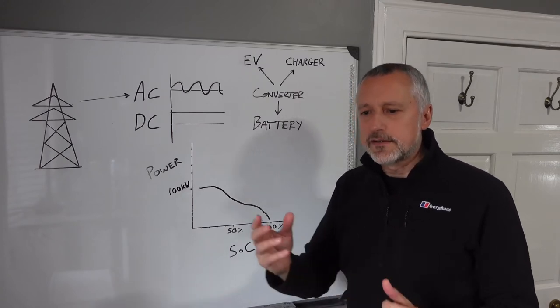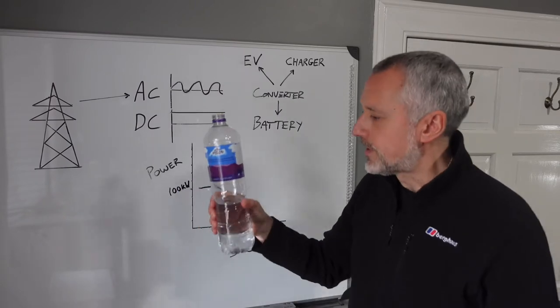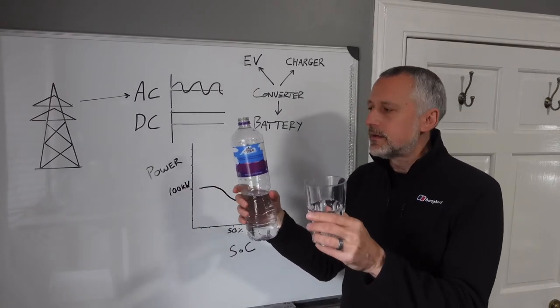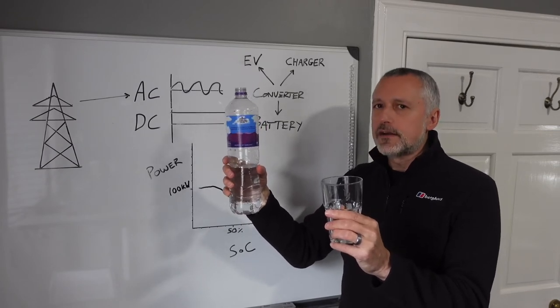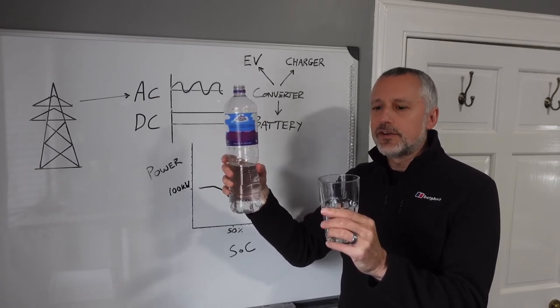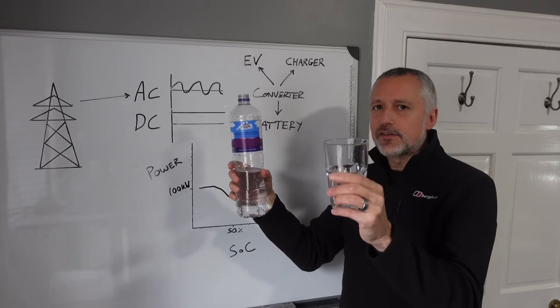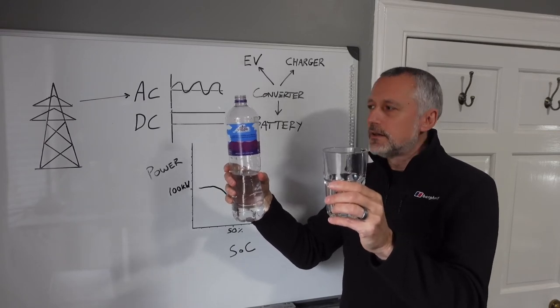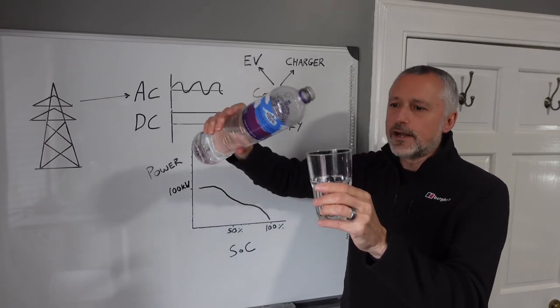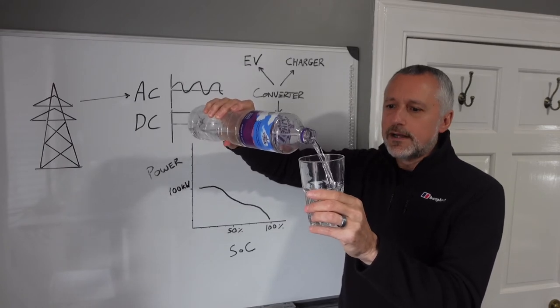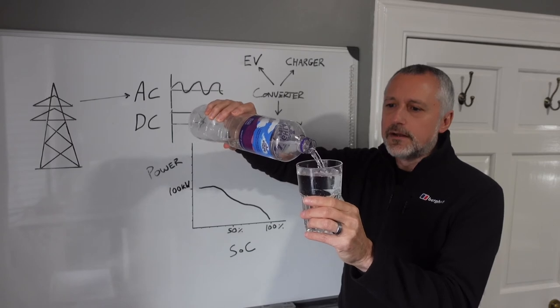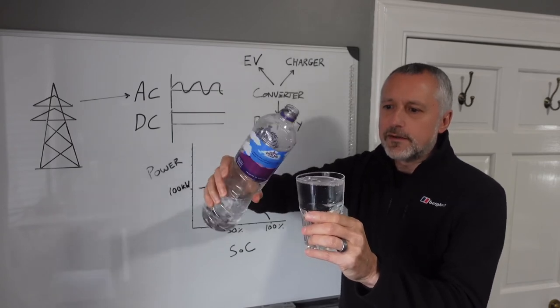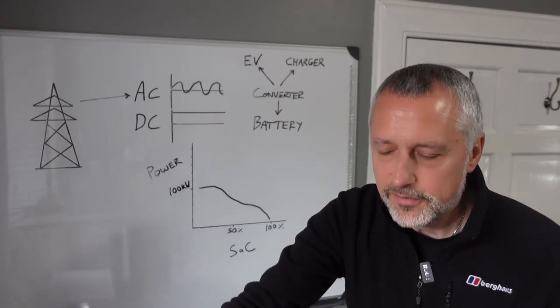So to explain that, I've got a bottle of water and a glass. The bottle represents the charger and the water within it is the energy coming out, and then the glass is your battery in the car. So if I start pouring, I can pour quite quickly, and then as I get to the top I have to slow down, slow down before I get to the top, and I'll just go that far before I spill it.